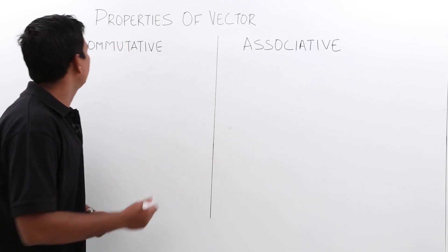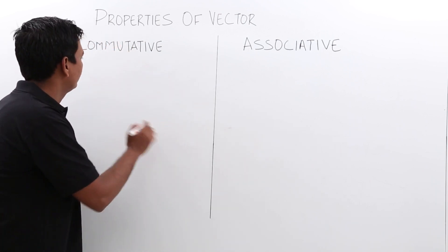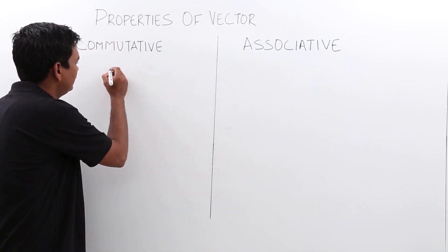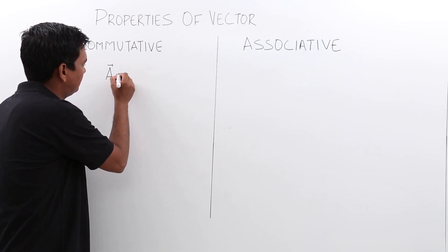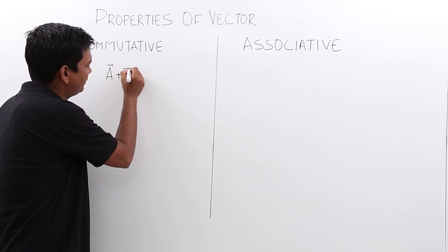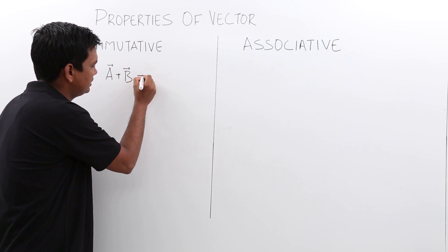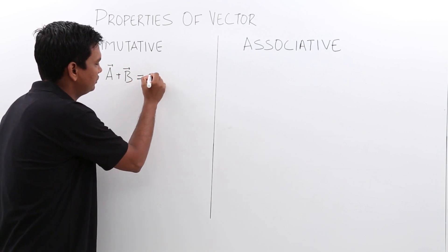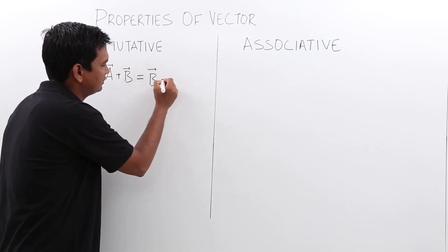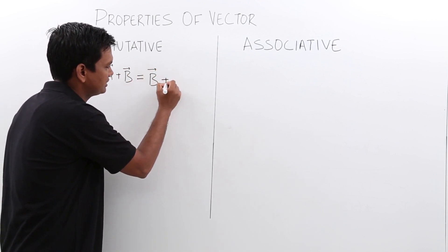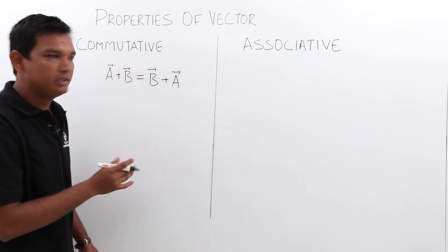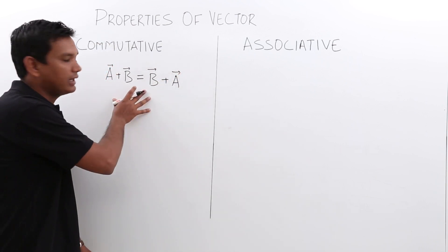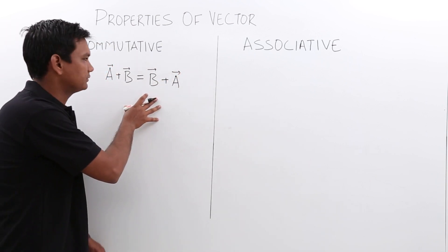Let us take the commutative property. Let us say that A vector plus B vector is equal to B vector plus A vector. This property is called the commutative property of vectors.